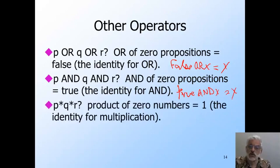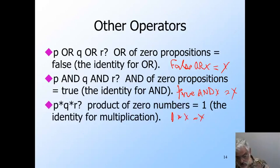The product of 0 integers or reals is 1. Because 1 times x equals x. And if we concatenate 0 strings, we should get the empty string since epsilon concatenated with any string x is x.